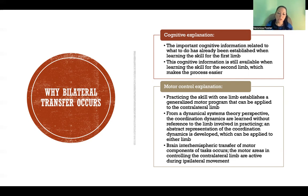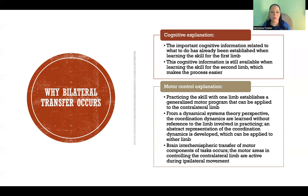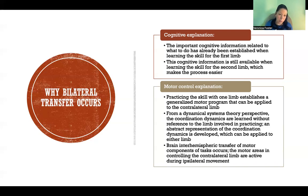Finally, brain interhemispheric transfer occurs. Even when using the right hand with the left hemisphere controlling it, there is also activation in the same motor areas on the right hemisphere. The brain is actually developing motor plans and motor components on both sides simultaneously, giving the other hand a head start on coordinating and executing the motion. With just a little practice, you'll be able to perform the skill equally on both sides. Thank you for watching — I'll see you in the next video.